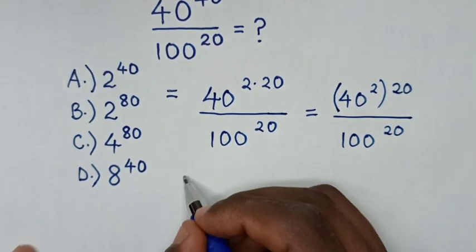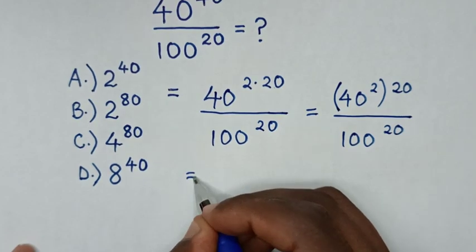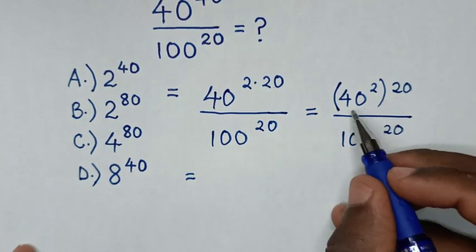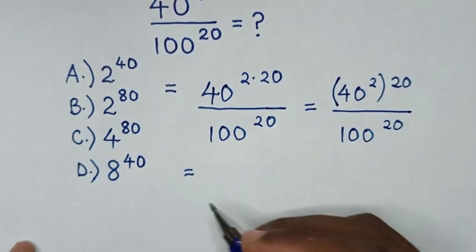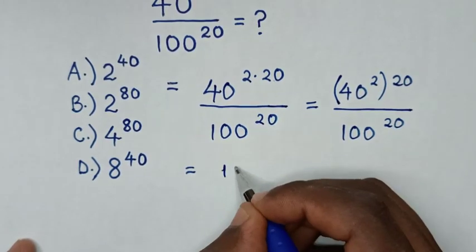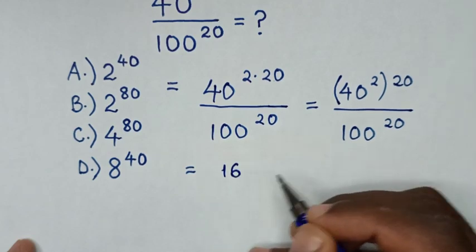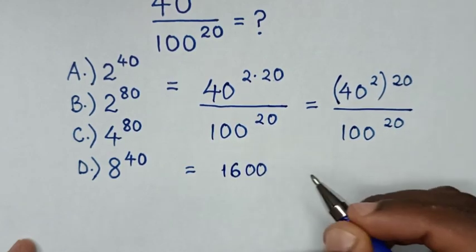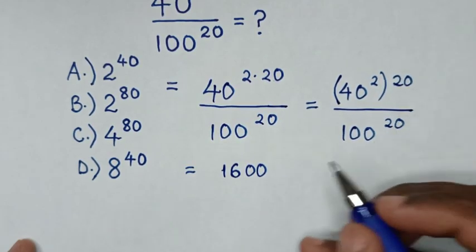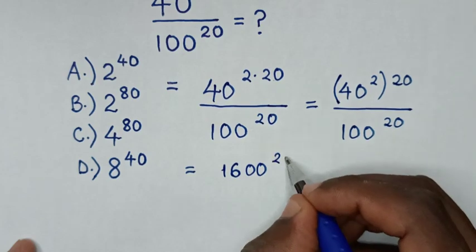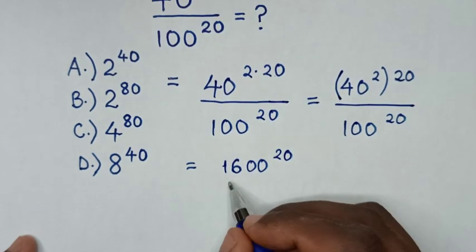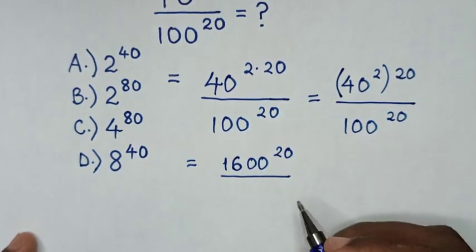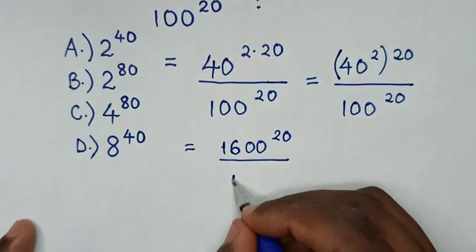In the next step, it will be equal to: 40 power of 2 is the same as 4 squared, which is 16, and 0 power of 2 gives 2 zeros, making 1600, then power of 20, over 100 power of 20.